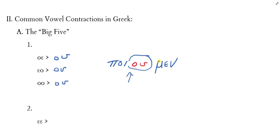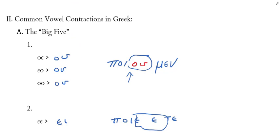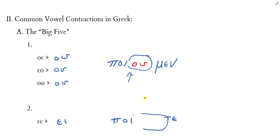The second contraction: when epsilon and epsilon come together, they become the diphthong epsilon-iota. Let's look at an example. *Poie* is the verb stem for 'to do,' and if we want to say 'you' (second person plural) are doing, we add the personal ending *-te* but we need to add a connecting vowel. The connecting vowel epsilon and the stem epsilon are going to contract.